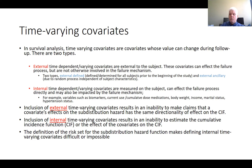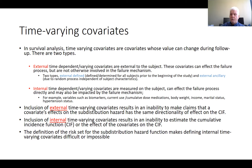The overwhelming majority of time-varying covariates considered in medical research are internal time-dependent covariates. They are measured on the subject and can affect the failure process directly and may also be impacted by the failure mechanism. Examples of such variables include biomarkers, medication use — either current or cumulative dose — body weight, income, marital status, and hypertension status.